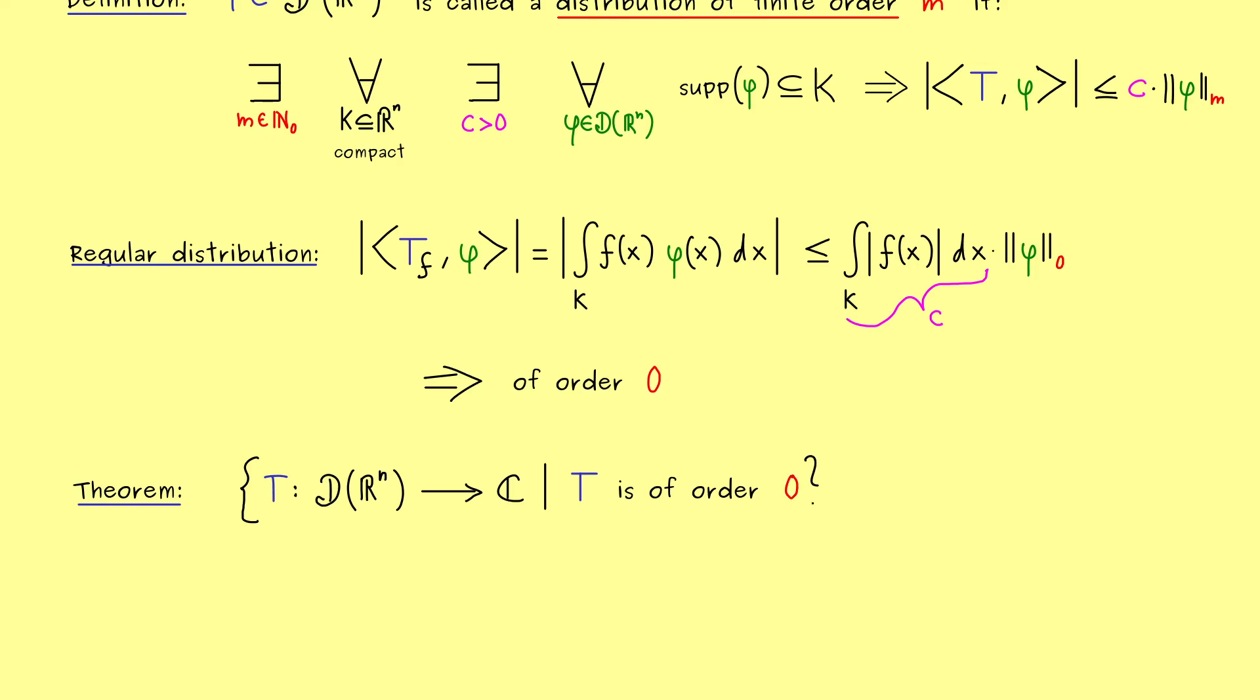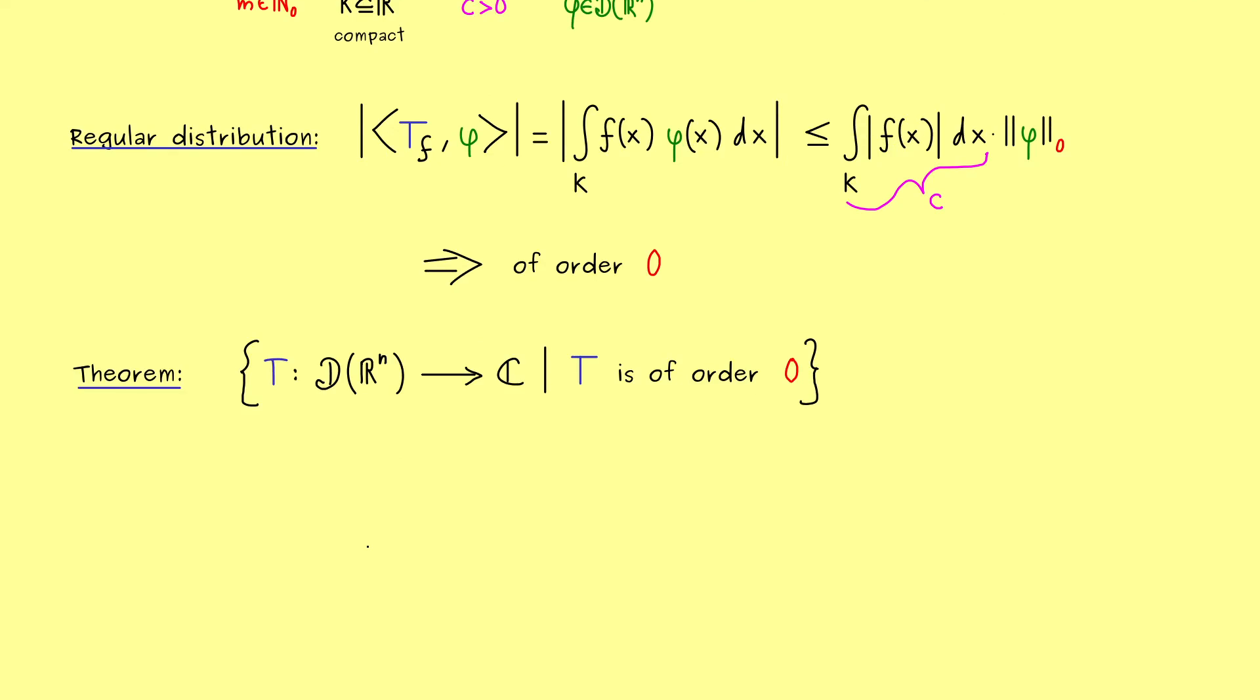So here we have the set of distributions where the order is given by 0. And on the other hand, we can look at complex measures. So more precisely, we have a map μ defined on the Borel sigma algebra. And this one I denote by curved B of R^n. If you don't know that, please watch my measure theory series.